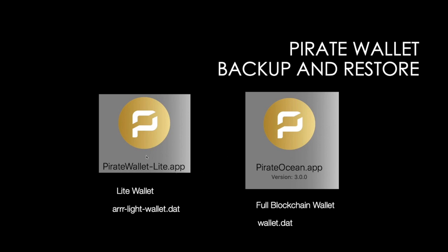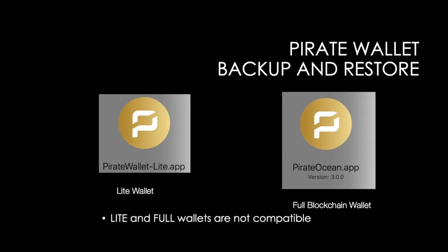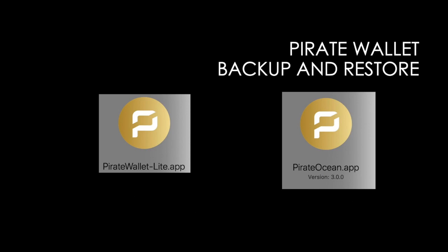Just to give you a comparison between the Pirate Lite wallet and the Pirate Ocean full node wallet: the full node wallet downloads the entire blockchain, which is probably now about 9 or 10 gigabytes. The Pirate Wallet Lite does not. The Pirate Lite has a wallet file called arr-light-wallet.dat, whereas the Pirate Ocean app stores the wallet in a different directory, and that file name is wallet.dat. Another difference is the Pirate Lite wallet and the full wallets are not compatible, so you can't use one from the other.